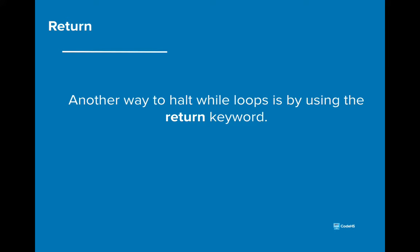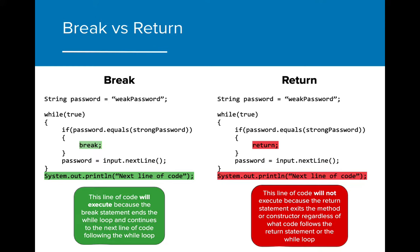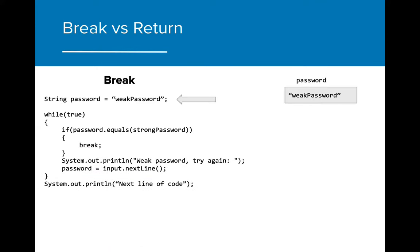We can also halt the execution of a while loop by using the return keyword. The key difference between break and return is that break doesn't return any value to the method or constructor, but rather forces an exit from the while loop. In this example, there are two lines of code that are identical except for the break versus return statement. When the password is equal to strong password, the break code will exit the while loop and continue to the next line of code that follows the while loop. For the return statement, the return keyword will prompt the program to stop and return back to the initial program that called the method.